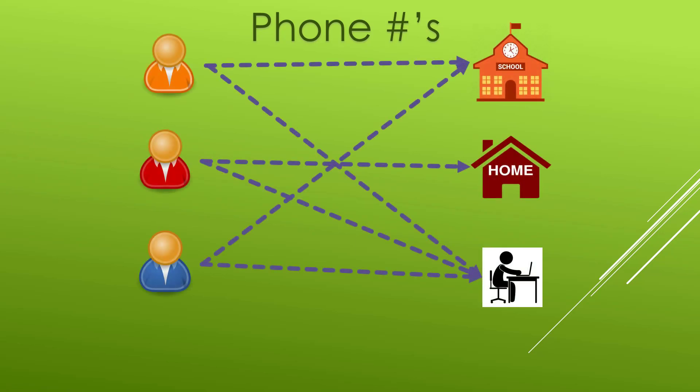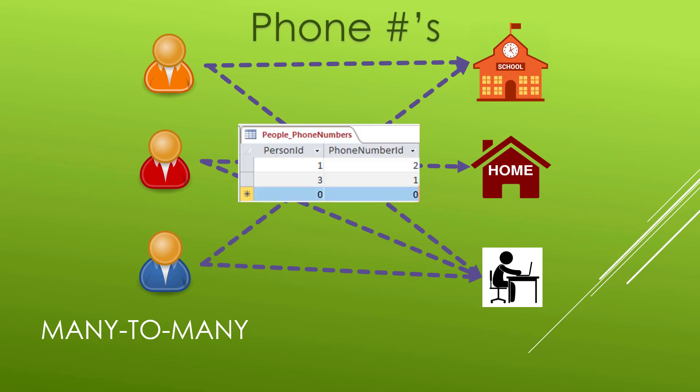Let me set up the scenario. We have our phone numbers and a many-to-many relationship between the different phone numbers and the people using them, because we might have one number that belongs to multiple people and multiple people have different phone numbers. We have to keep track of this arrangement using a join table — essentially describing the relationship between people and phone numbers.